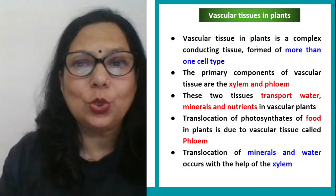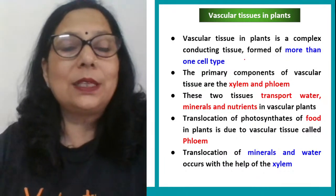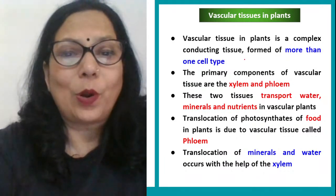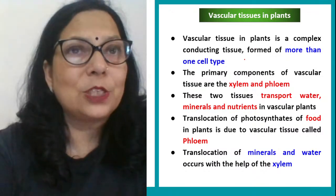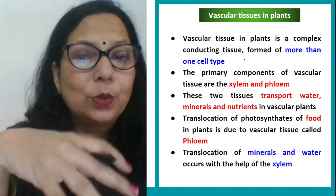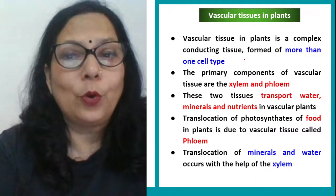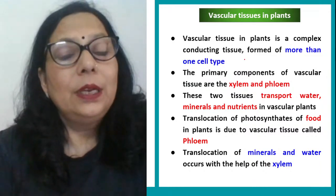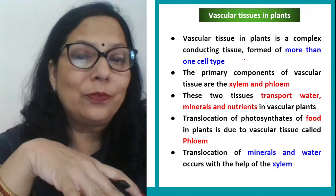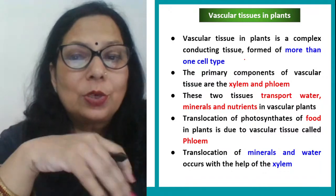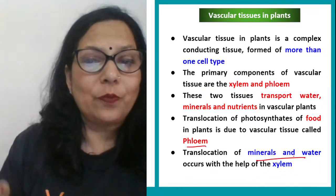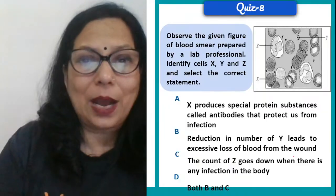Vascular tissue in plants: plants transport through xylem and phloem. Xylem carries water from roots to the entire plant. Phloem transports food. So translocation of food takes place through phloem, and transpiration of minerals and water takes place through xylem. Now quiz time begins.